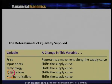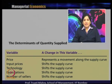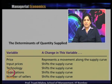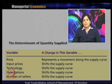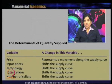We know that the supply curve is upward sloping and has a positive slope. But when there is a change in any of the factors which determine quantity supplied — whether it is price, input price, technology, expectation of future price, number of sellers, or the price of related goods in the market — whenever there is a change in one of those variables, there is a change in supply.